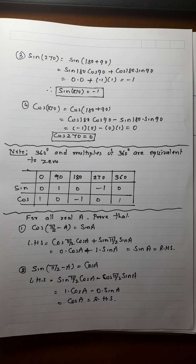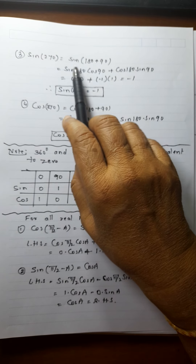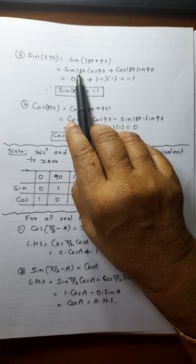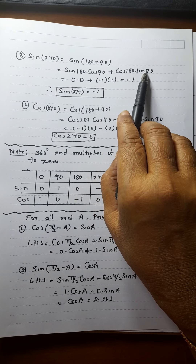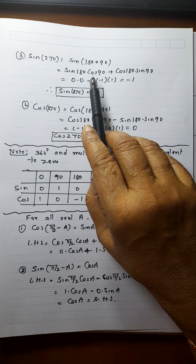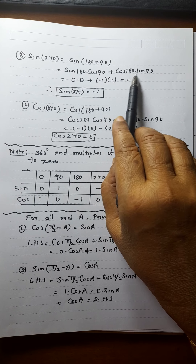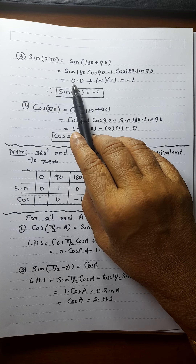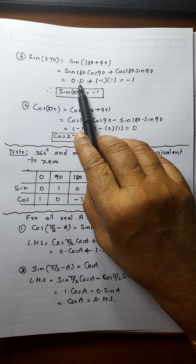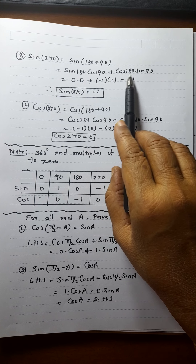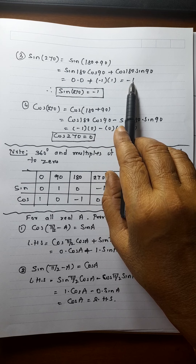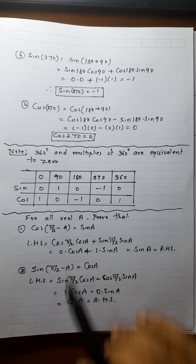Sin of 270° is sin of (180°+90°). Sin of (A+B) is sin A cos B plus cos A sin B. So it is sin 180° cos 90° plus cos 180° sin 90°. Sin 180° is 0 and cos 90° is 0, so the first term is 0. Cos 180° is −1 and sin 90° is 1. So the answer is −1. Therefore, sin 270° = −1.